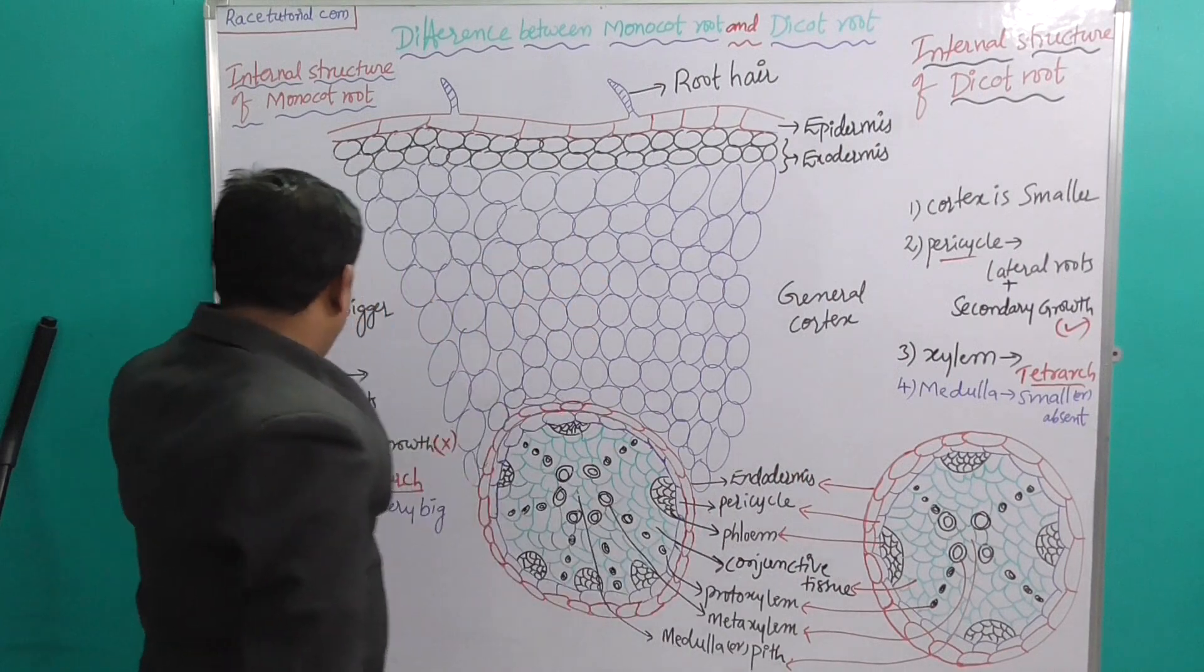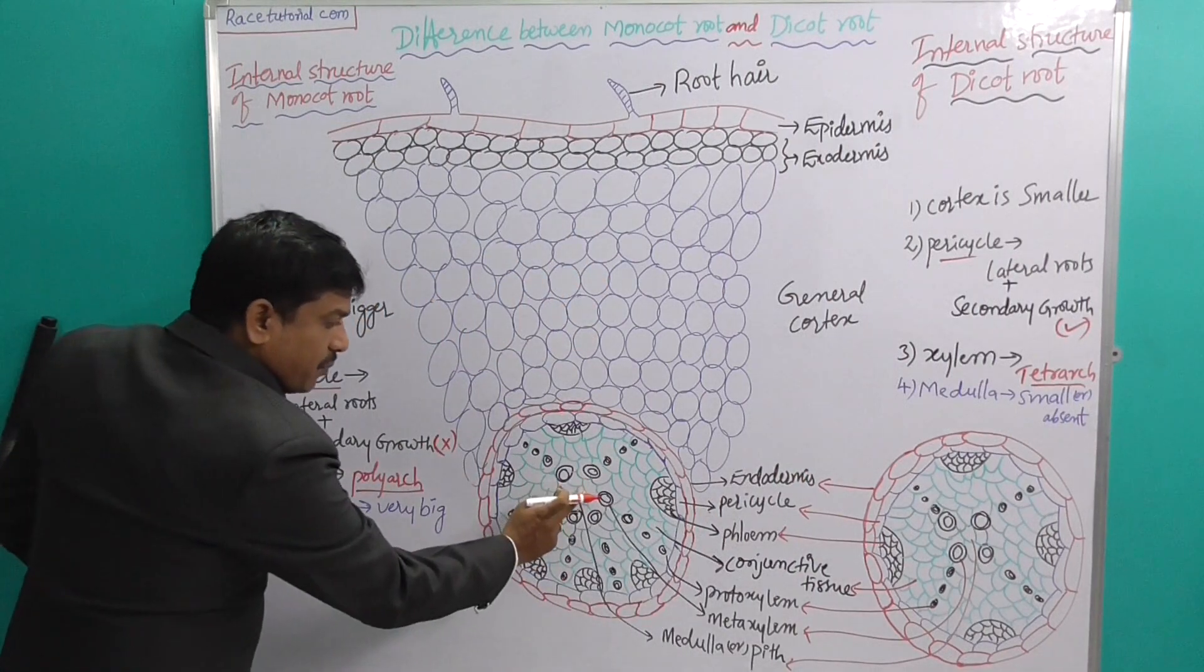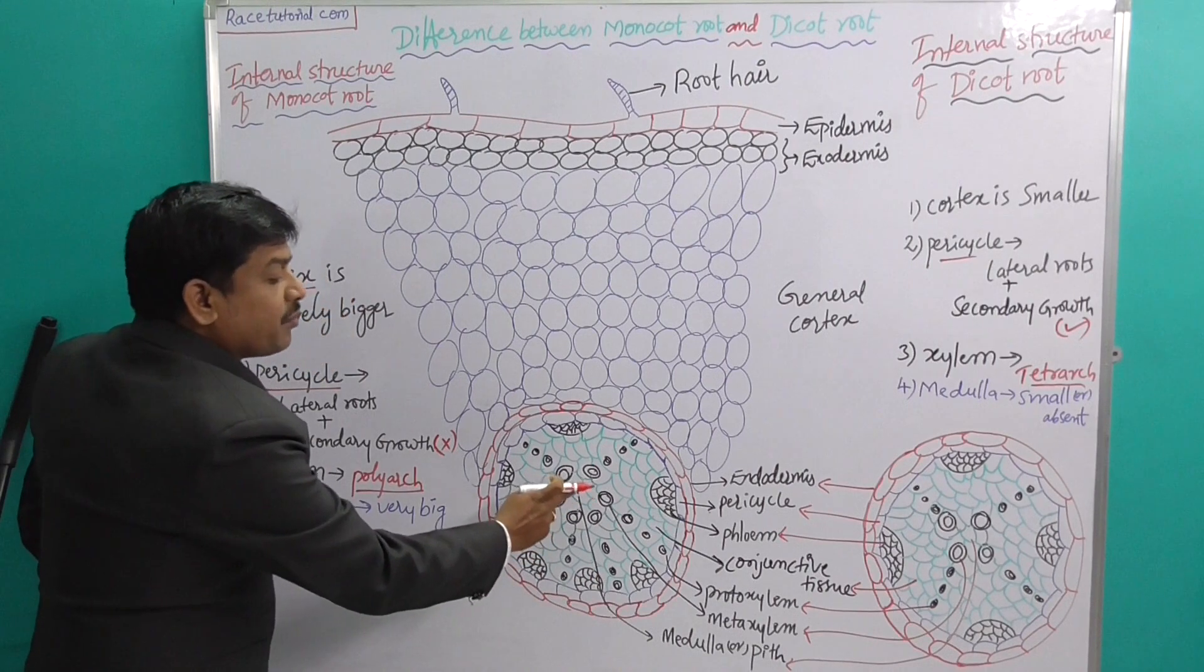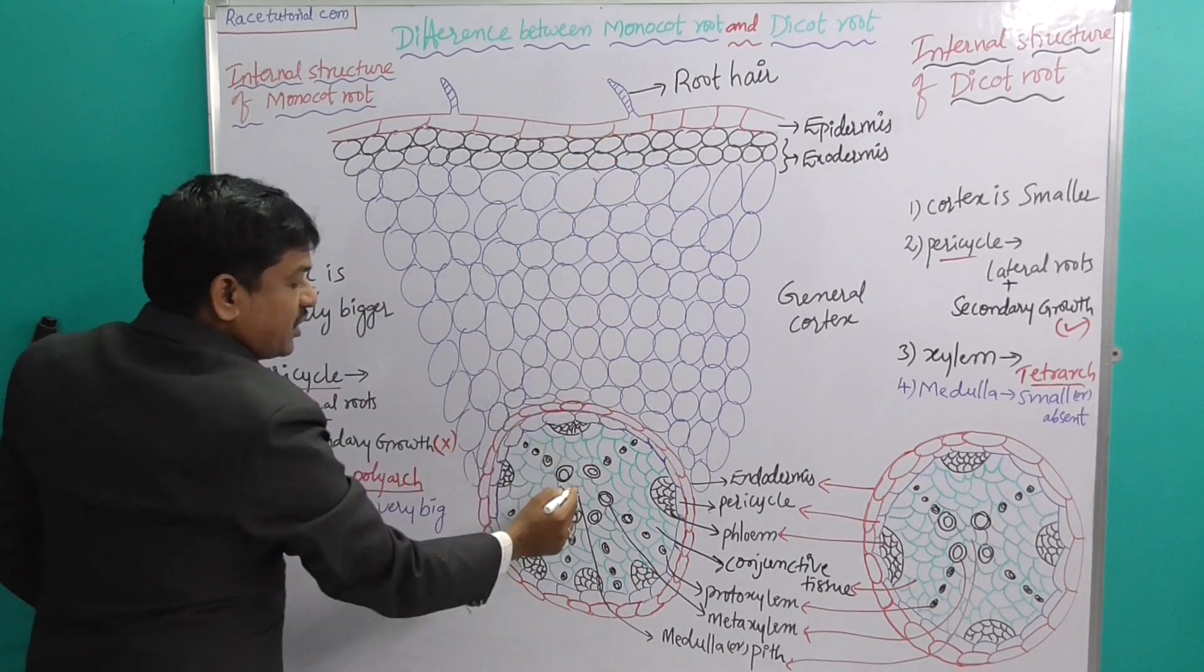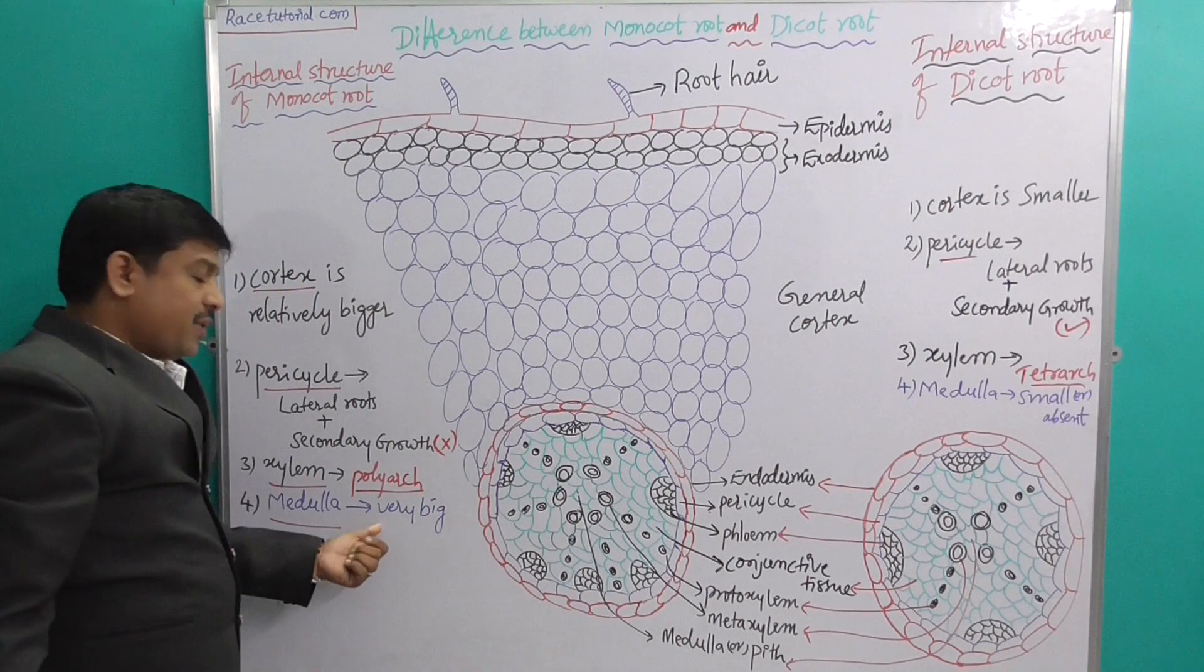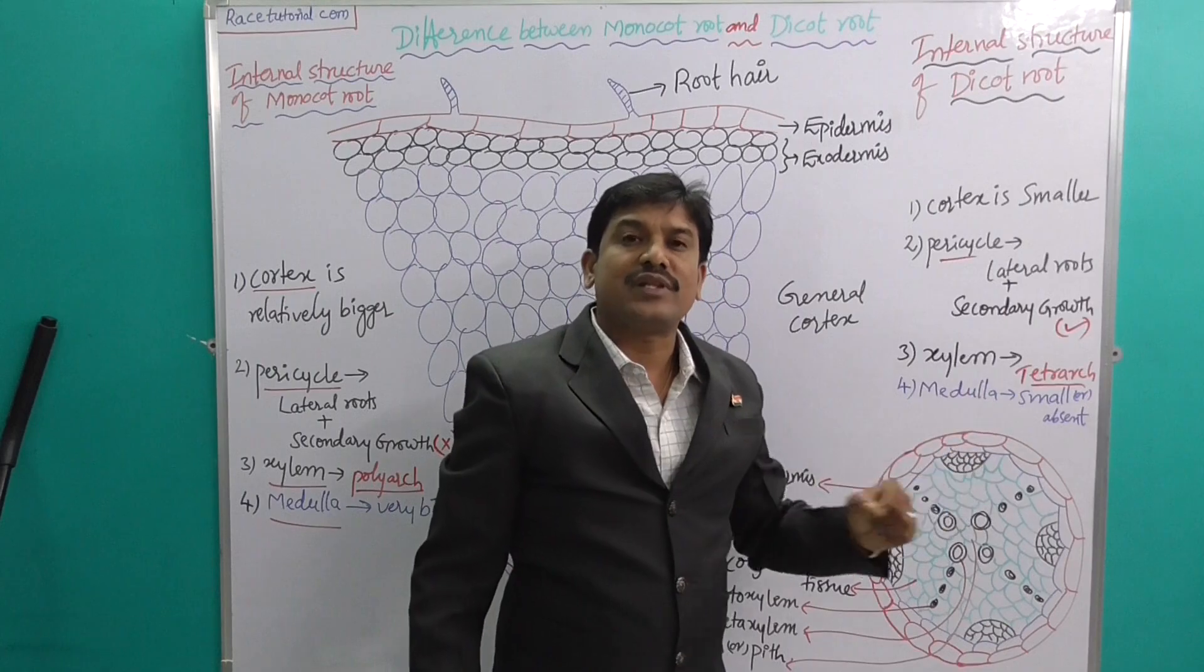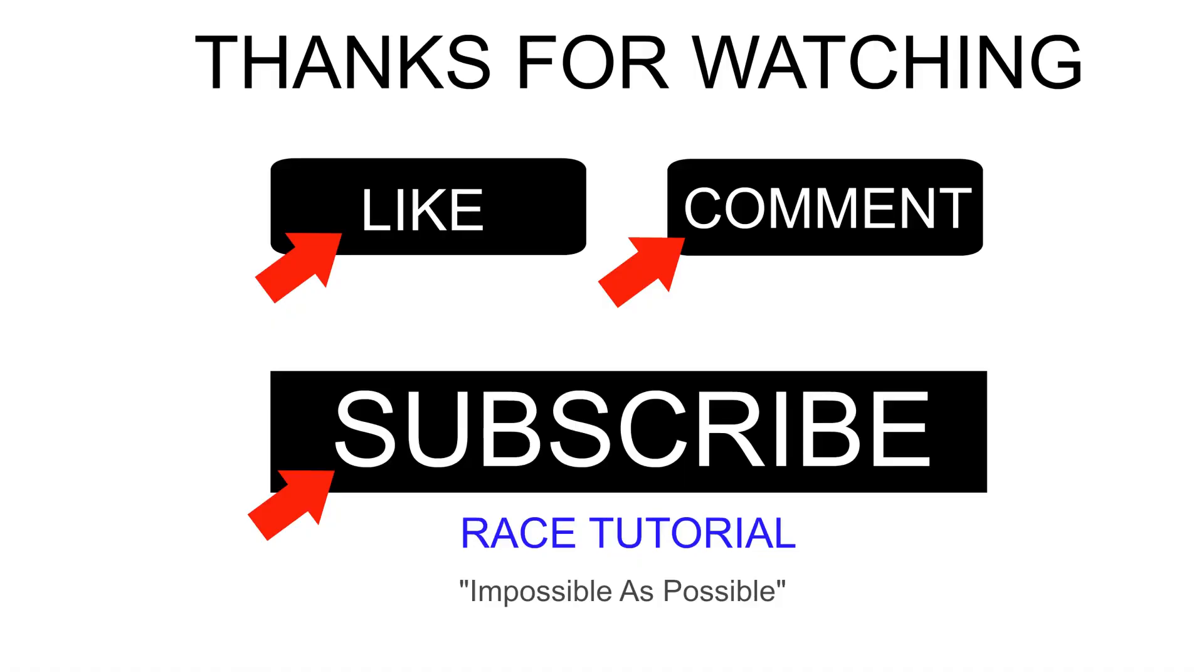Next is medulla. The medulla is present in the center of the stele. In monocot, it is very big, but in dicot, it is very small. If you liked watching this video, please like, comment, and subscribe.